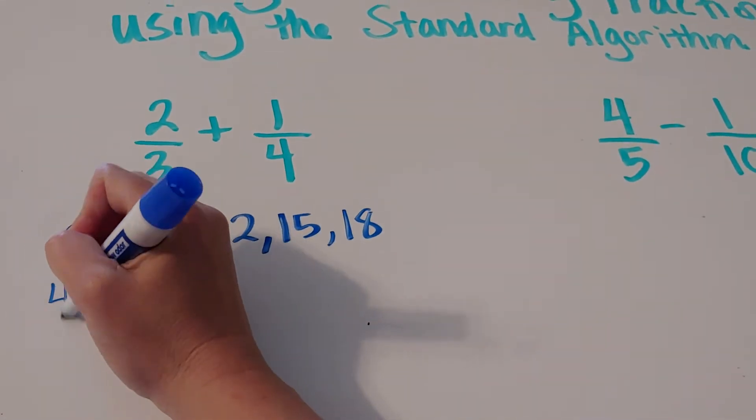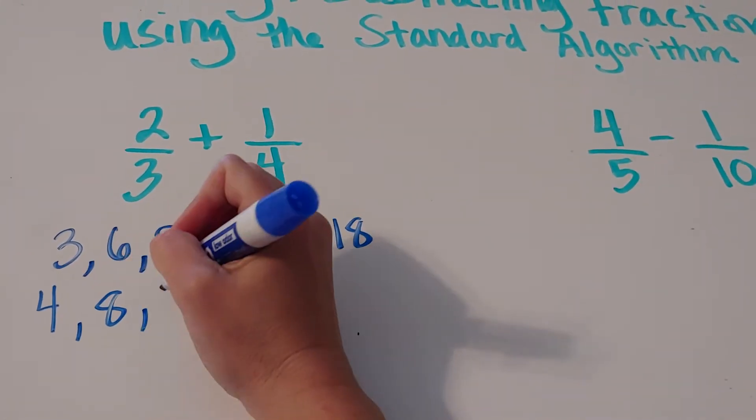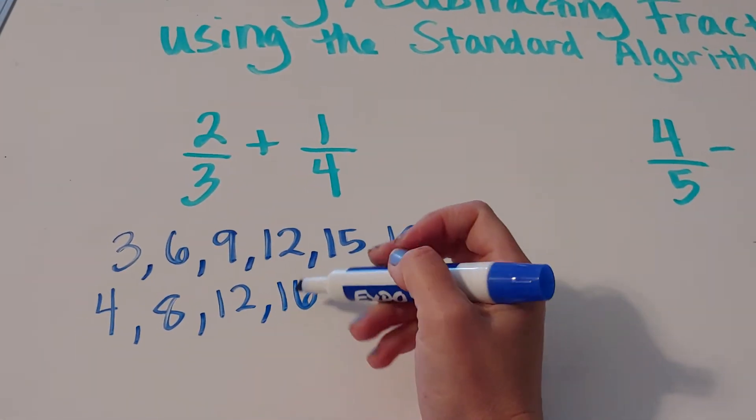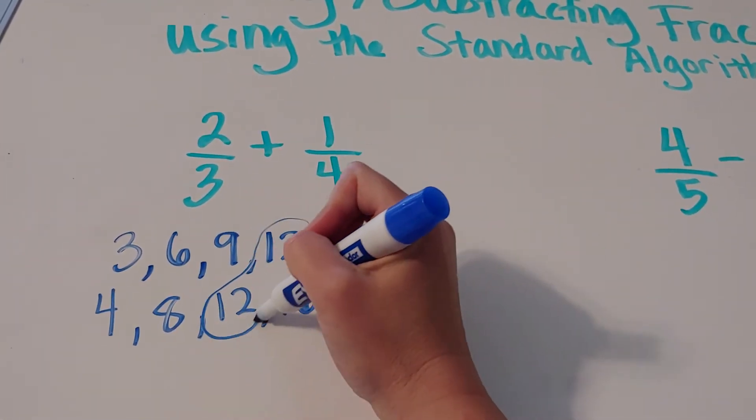And then you do the same thing with 4. So when I write all my multiples of 4, what I want to do is I want to find the first number that's on both lists. And as you can see, it's 12.